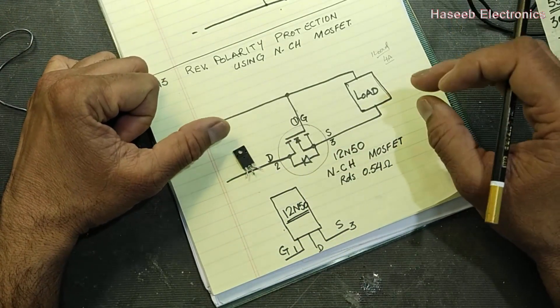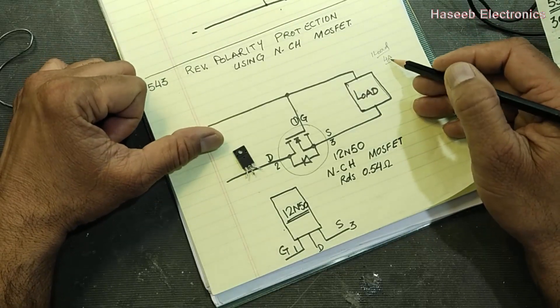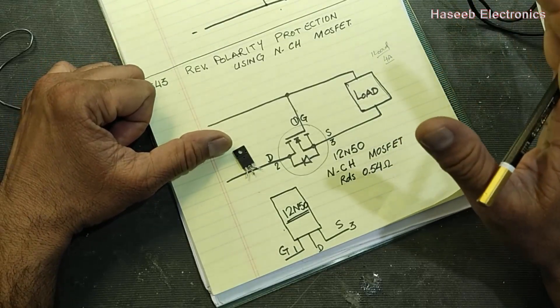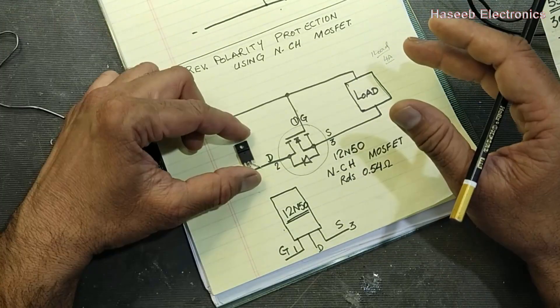If our load is inductive load, in that case we can multiply by 2.5 or 3 for safe range for reverse stress on the MOSFET.